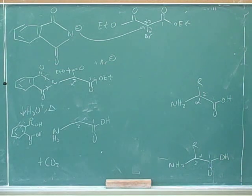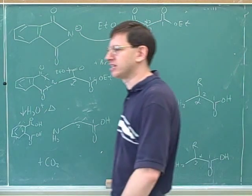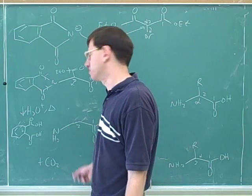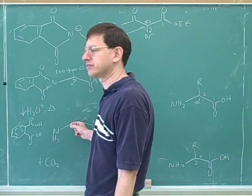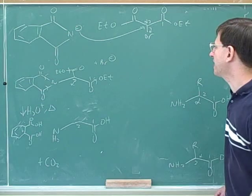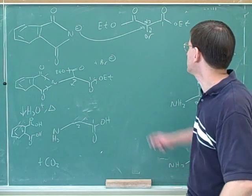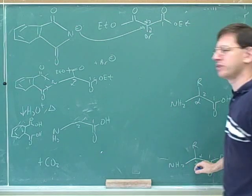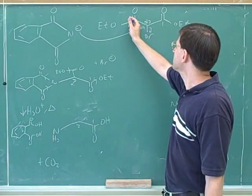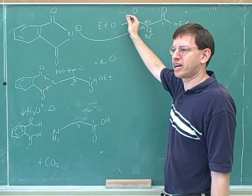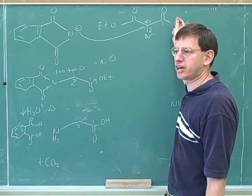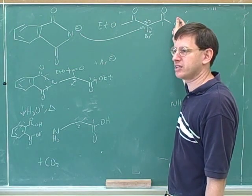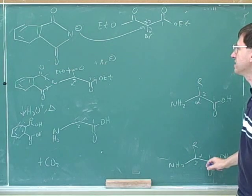Now we've succeeded in doing what we wanted to do — we've made an amino acid. Which amino acid have we made? We made glycine, the most boring amino acid, because we didn't put any interesting side chains on here. So the basic idea of the Gabriel synthesis: you start with this 1,3-dicarbonyl, and this doesn't look very similar to an amino acid, but this whole thing is going to get blown away by the decarboxylation, and this is going to get turned into the carboxyl group. So this really is a good way to make an amino acid.